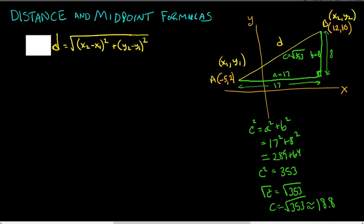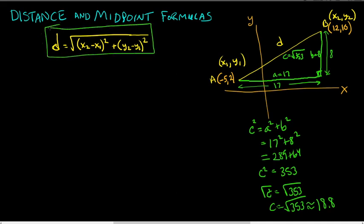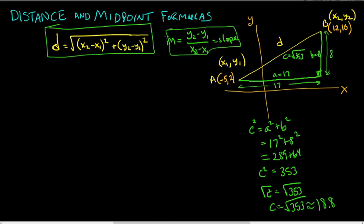You should know this formula, whether you can figure it out from the Pythagorean theorem or just memorize it. Don't get confused with slope. Slope is a number — we call it m — and it also involves x1, y1, x2, y2, but slope is the ratio of differences. Don't get confused with slope; a lot of people, when asked for distance, find the slope instead. We're not doing slope here. D for distance, m for slope.